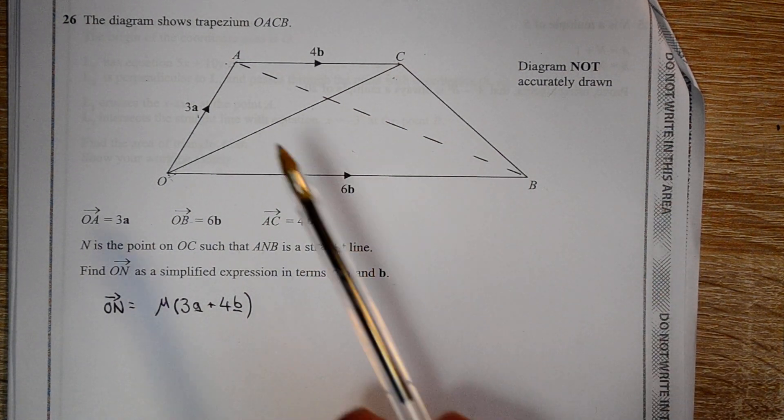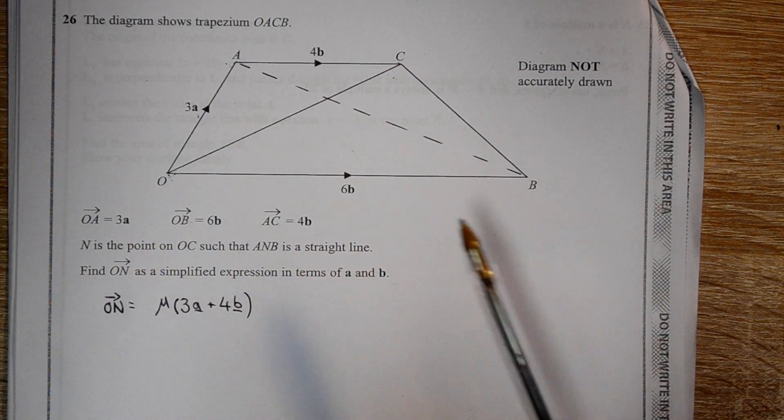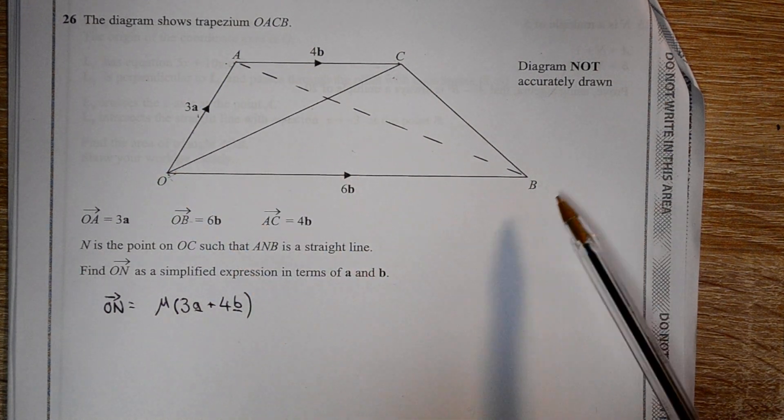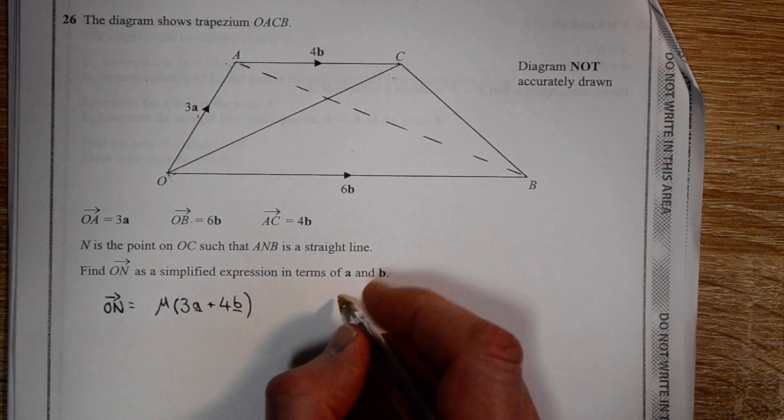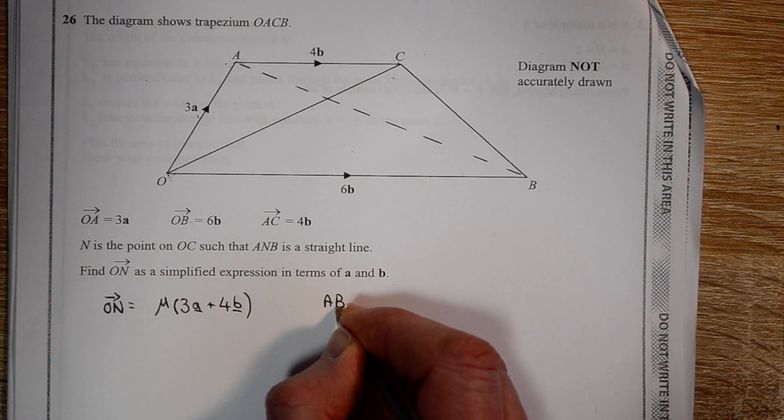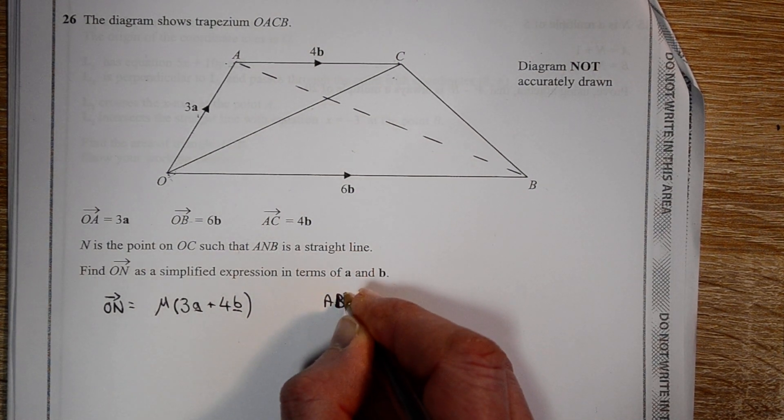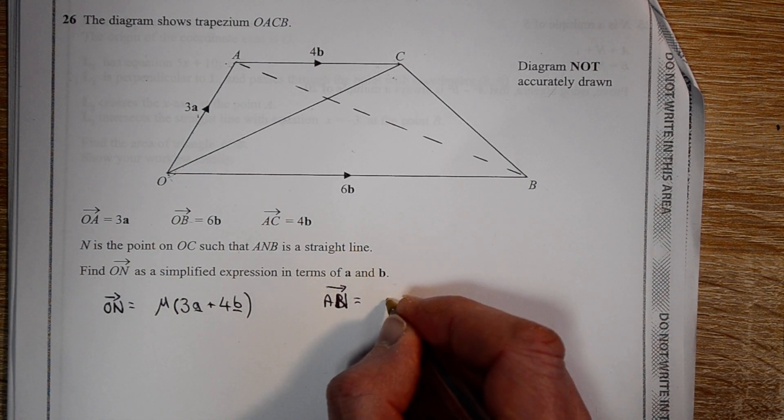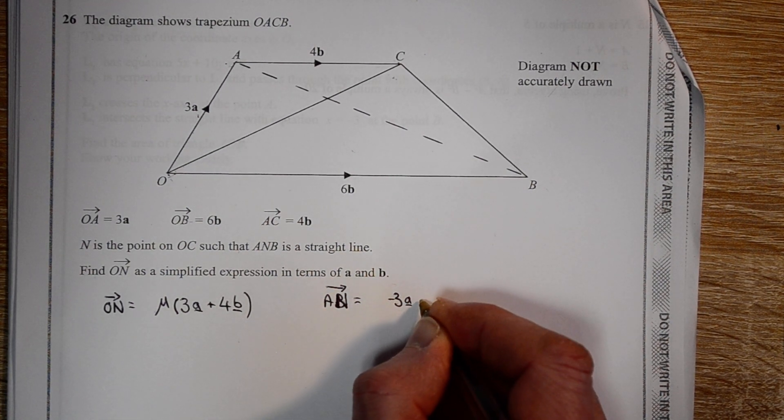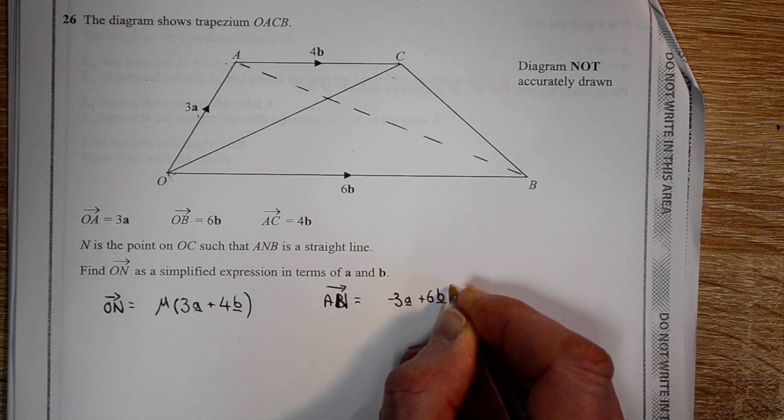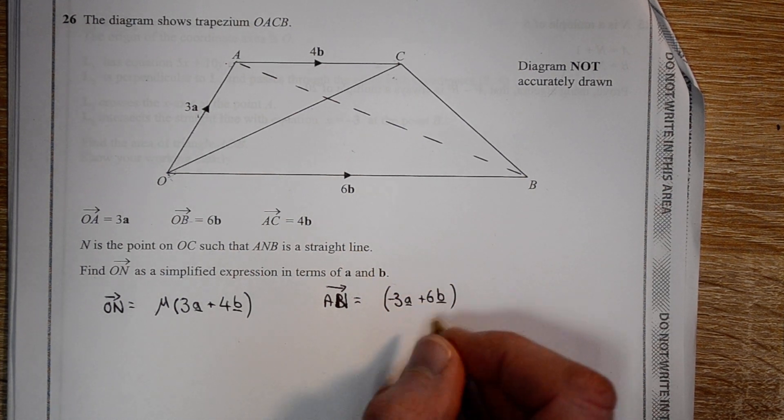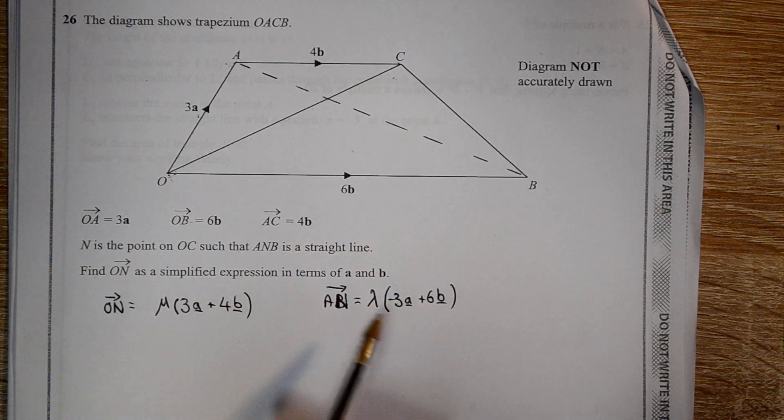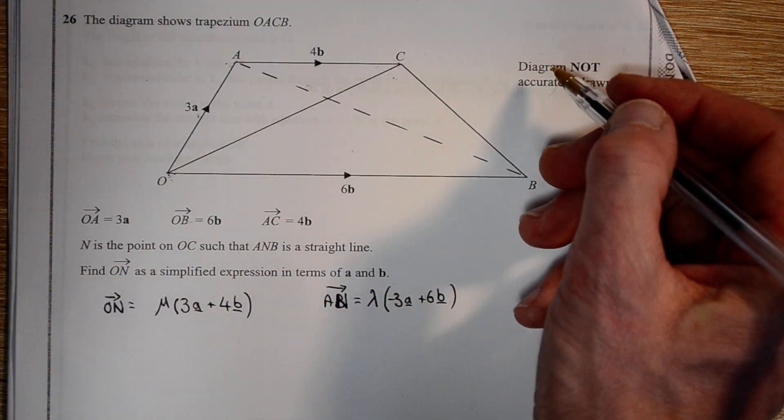On the other hand, we also know it's on A to B, and so if we use our vectors A and B, we can find some fraction along where N is. This time I'm going to use the Greek letter lambda as the fraction along that line to get to our point N.